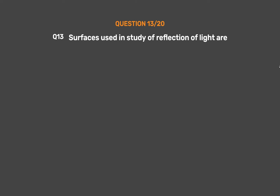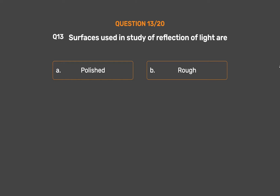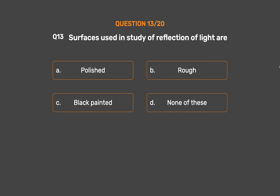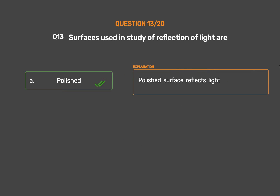Question number 13. Surfaces used in the study of reflection of light are: option A, polished; option B, rough; option C, black painted; option D, none of these. The correct answer is option A, polished. Polished surfaces reflect light.